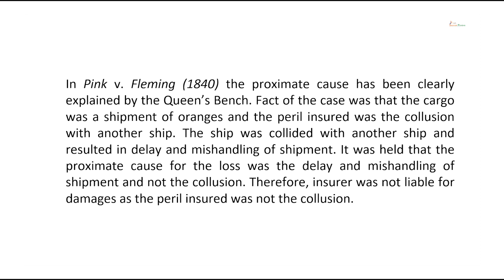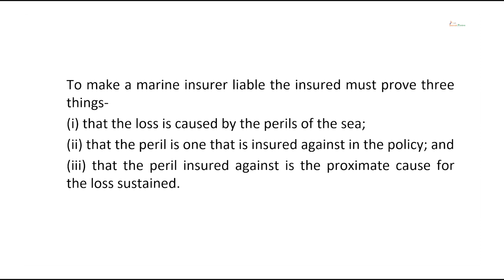To make a marine insurer liable, the insured must prove three things: number one, that the loss is caused by the perils of the sea; secondly, that the peril is one that is insured against in the policy; and number three, that the peril insured is the proximate cause of the loss sustained. These three things must be proved to get an insurance claim in marine insurance policies.